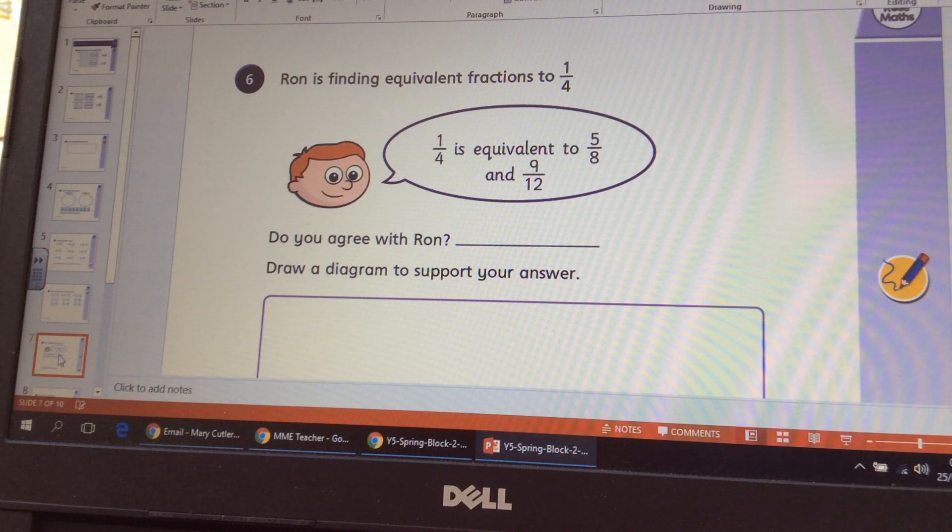Right, here Ron is finding equivalent fractions to a quarter. A quarter is equivalent to five-eighths and nine-twelfths. Do you agree with Ron? And you're being asked to draw a diagram here to support your answer. So think, a quarter, if he's multiplied a quarter he would have to multiply four by the same number as he's multiplying one. To get five-eighths so he's multiplied four by two to get the denominator eight. Has he multiplied one by two? There's some clues there to help you when you're solving that one.